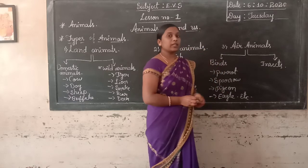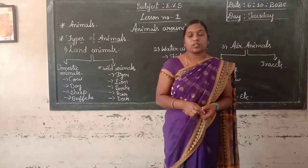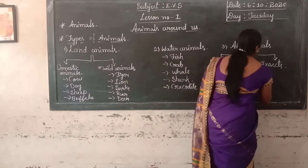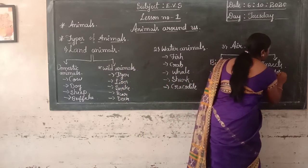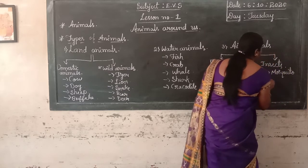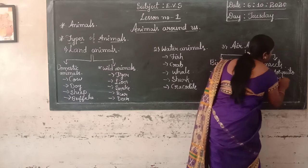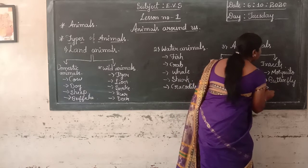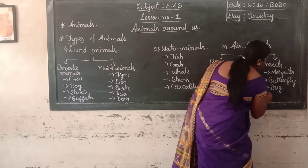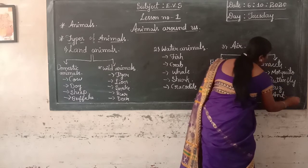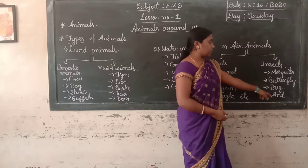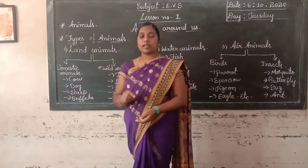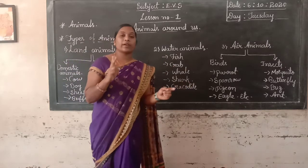Next, insects. Insects are small creatures. Insects commonly have six legs. For example, mosquito, butterfly, and ant. Butterfly is a beautiful insect. Insects commonly have six legs and also have wings.